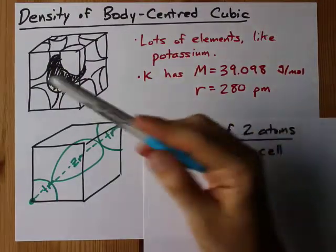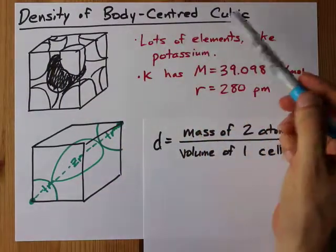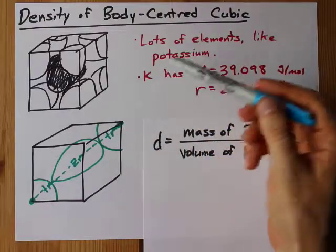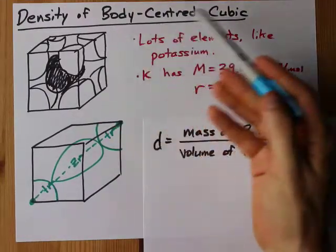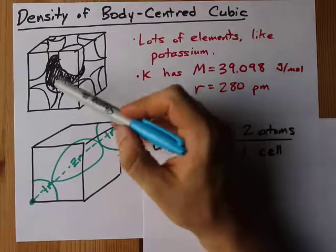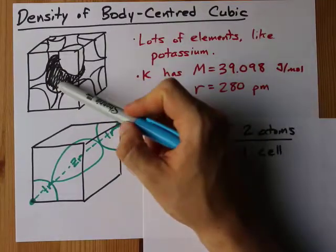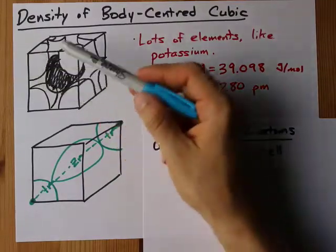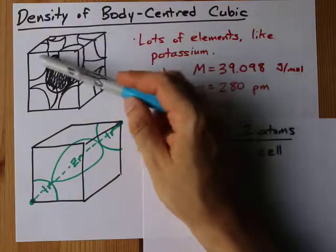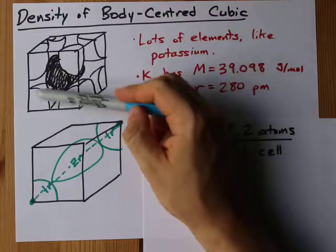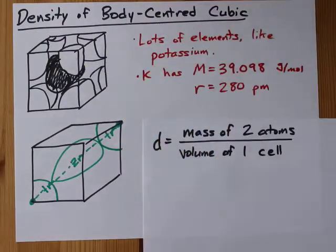Let's calculate together the density of a body-centered cubic arrangement. For example, potassium. There's lots of elements that take on a body-centered cubic arrangement where you have one full atom in the center and then a simple cubic-ish style arrangement of these eighths buttressed against that central atom on each of the eight corners.